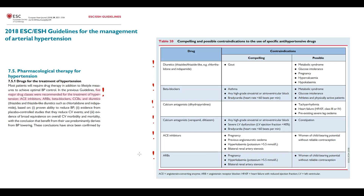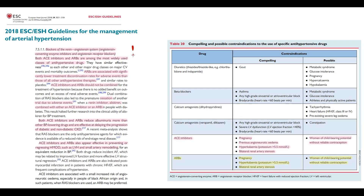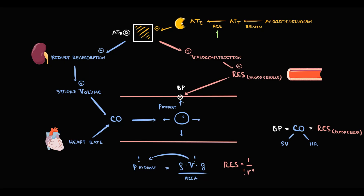The most popular medications for hypertension are blockers of the renin-angiotensin-aldosterone system: ACE inhibitors and angiotensin receptor blockers (ARBs). We prescribe one of these drugs for every patient with hypertension. ACE inhibitors block the function of angiotensin-converting enzyme, which decreases production of angiotensin 2 and thereby decreases activation of the angiotensin 2 receptor. In contrast, ARBs block the angiotensin 2 receptor directly.